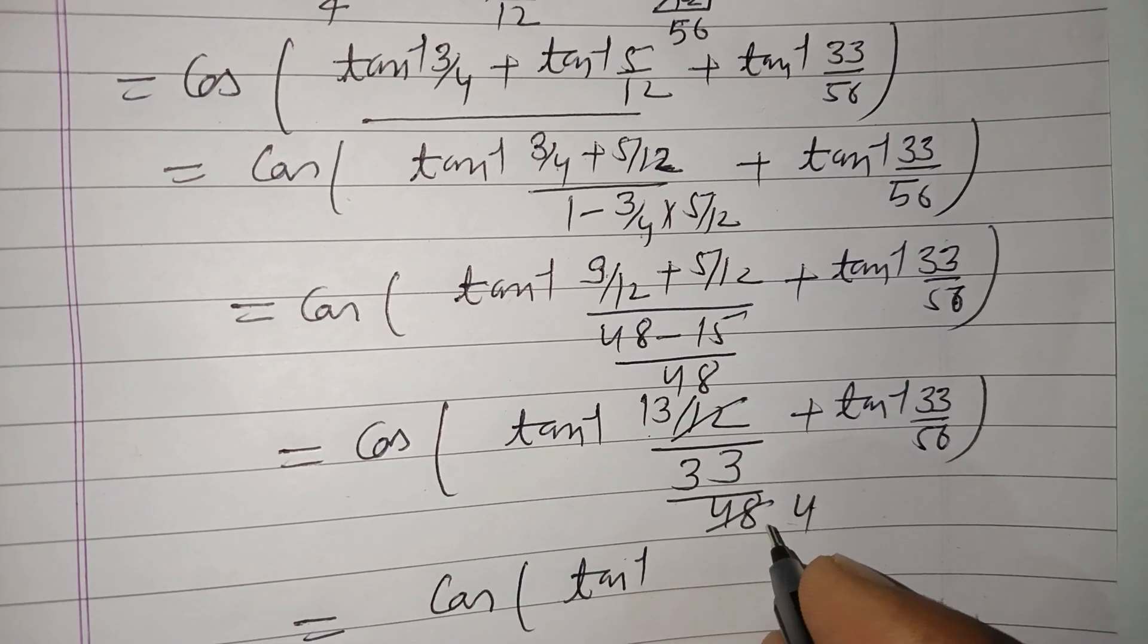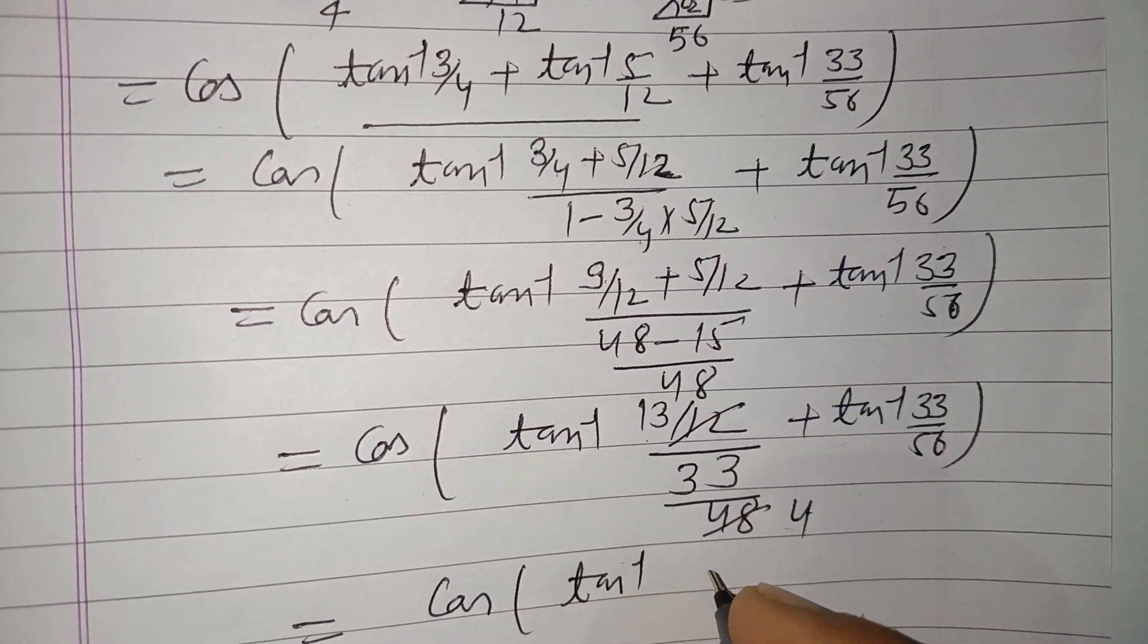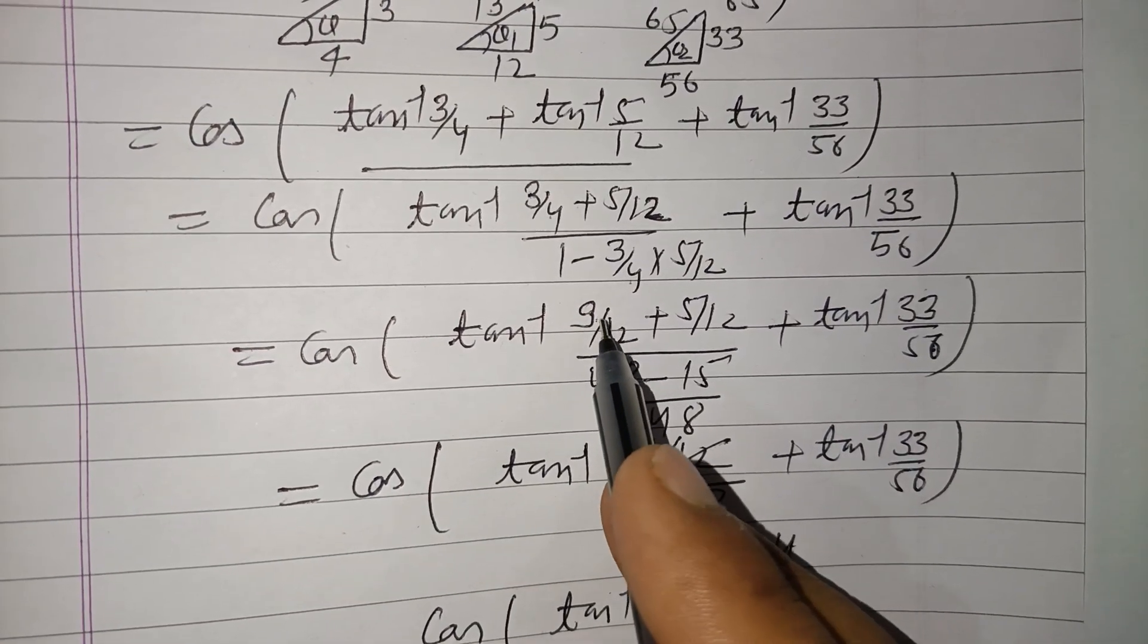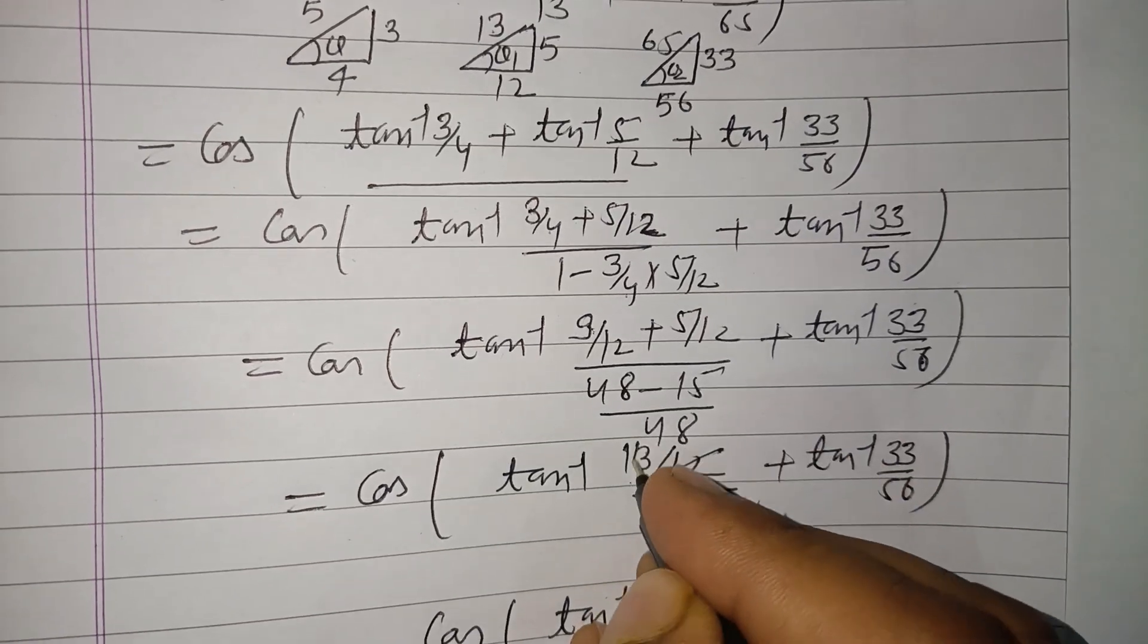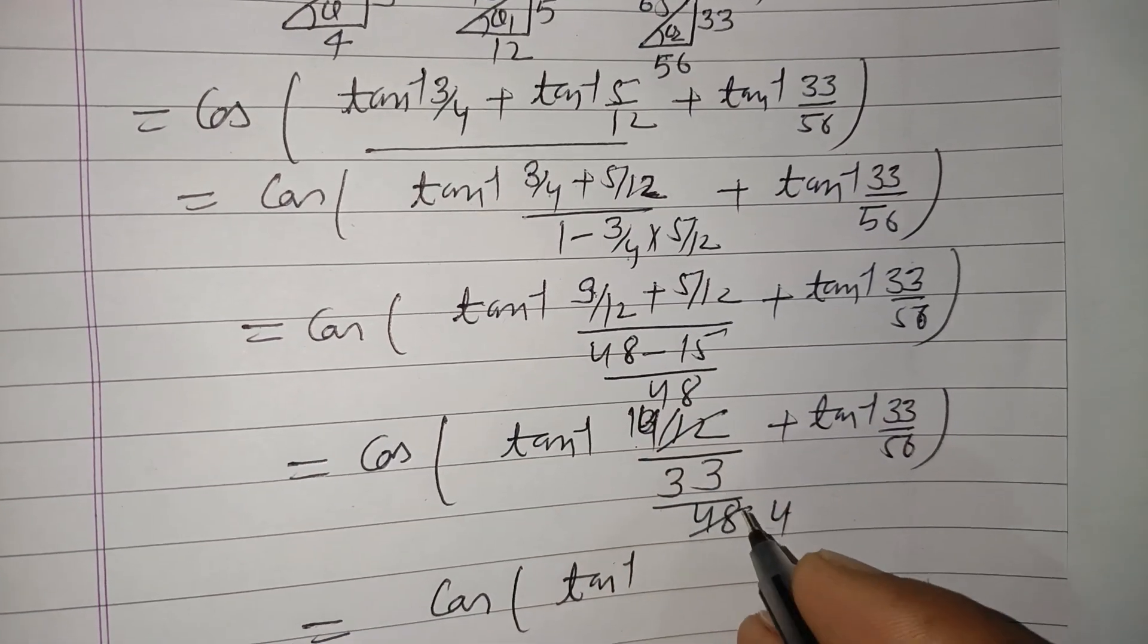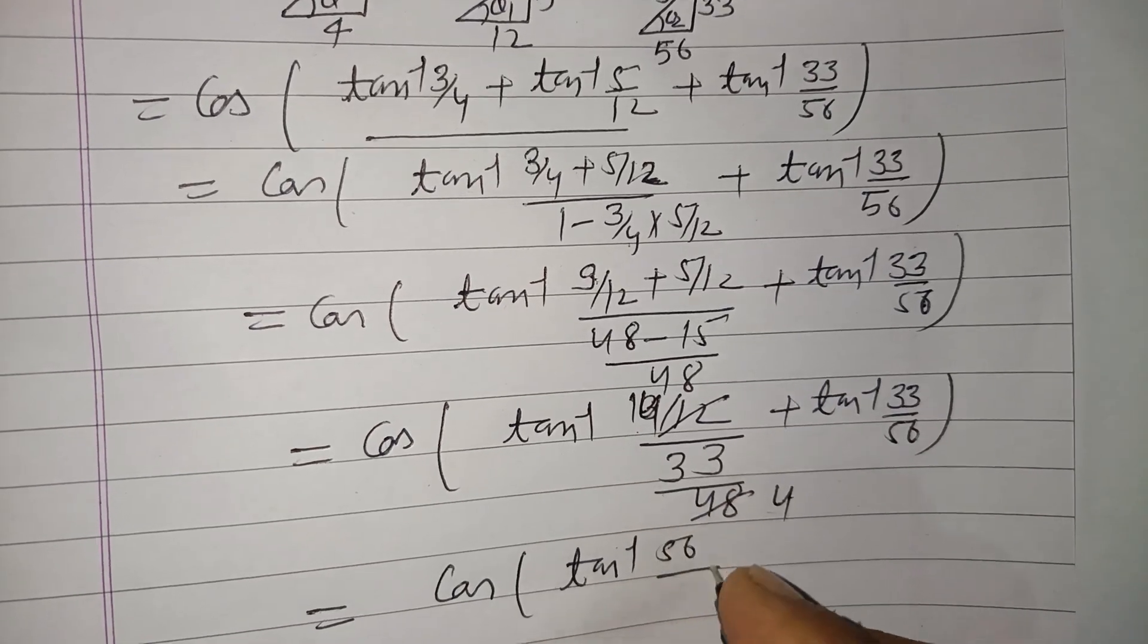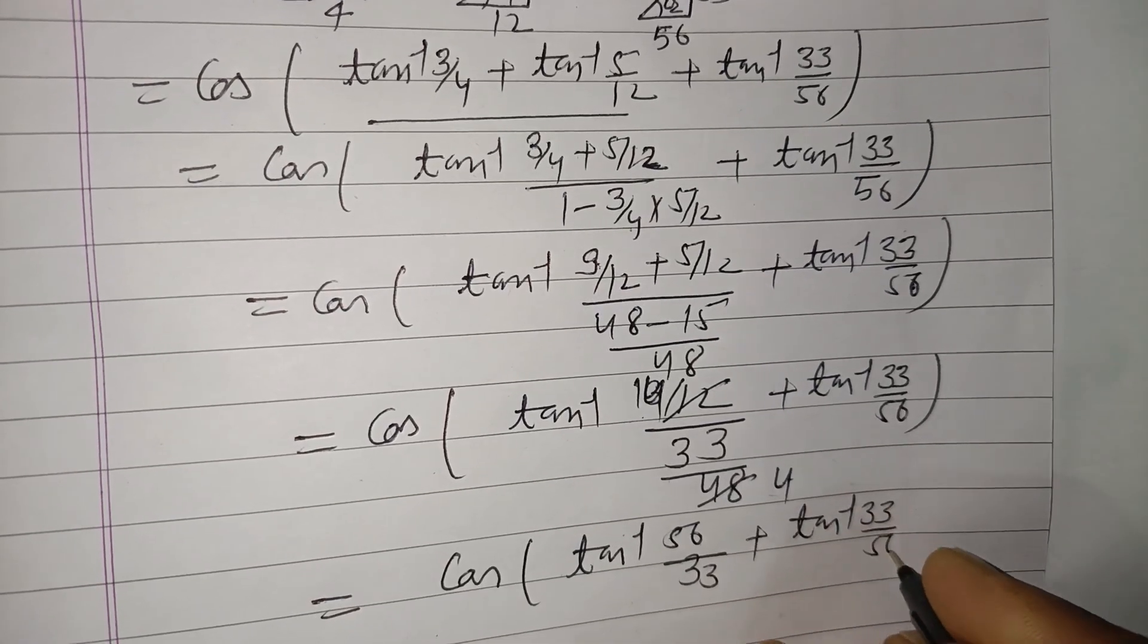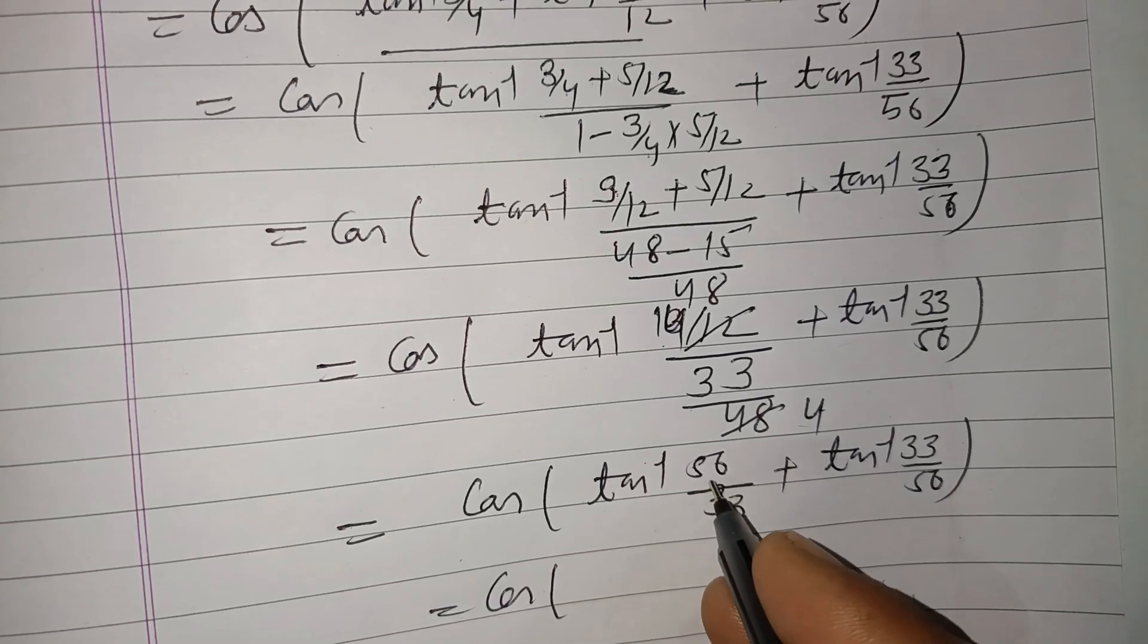We write this is 56 upon 33. The numerator becomes 56 upon 33 plus tan⁻¹(33/56).